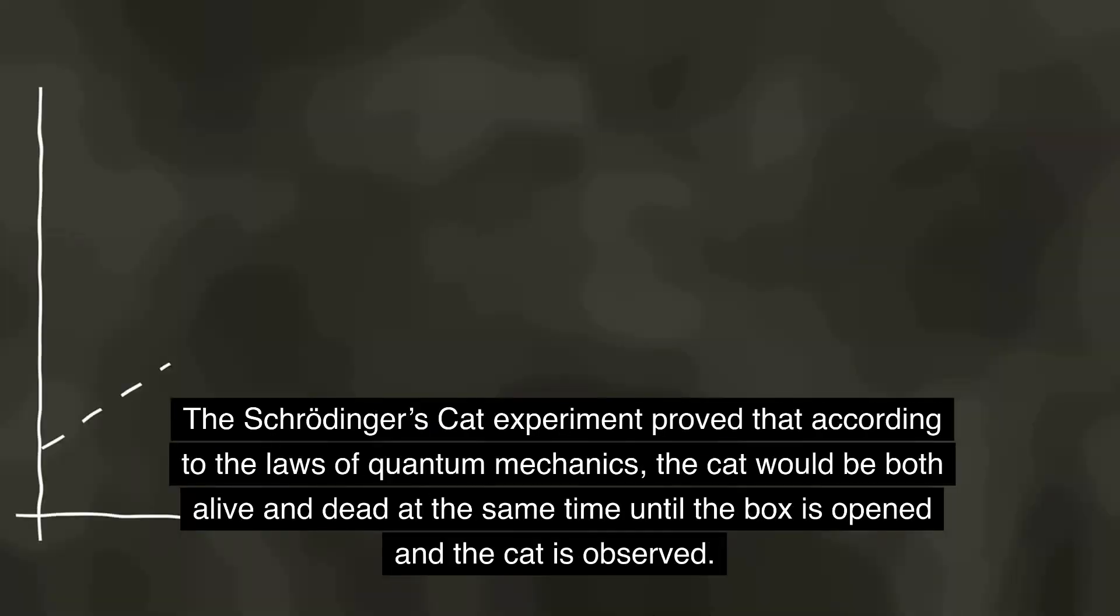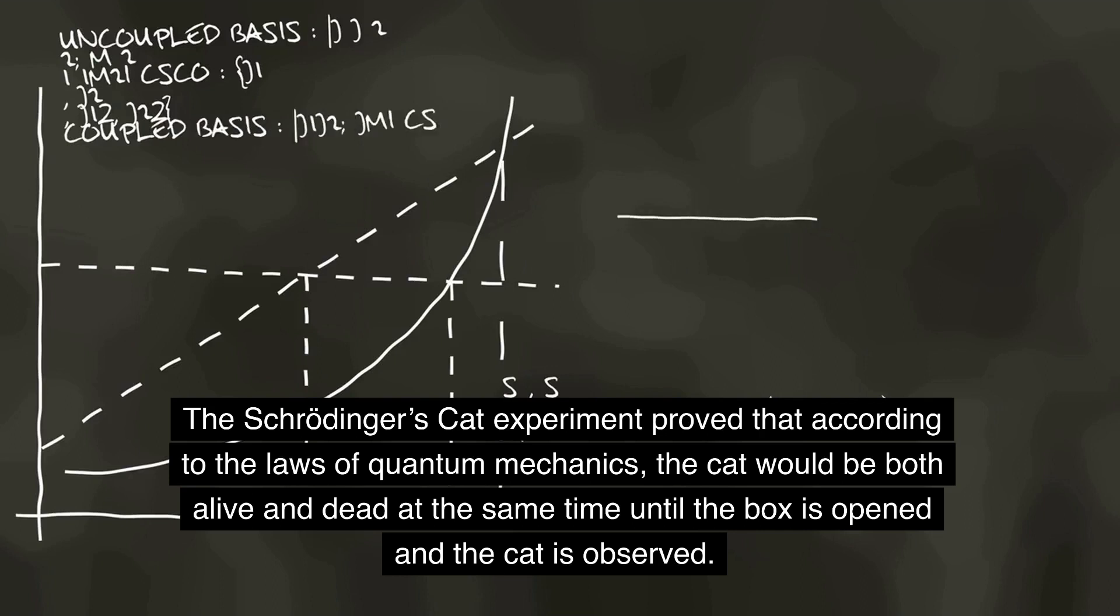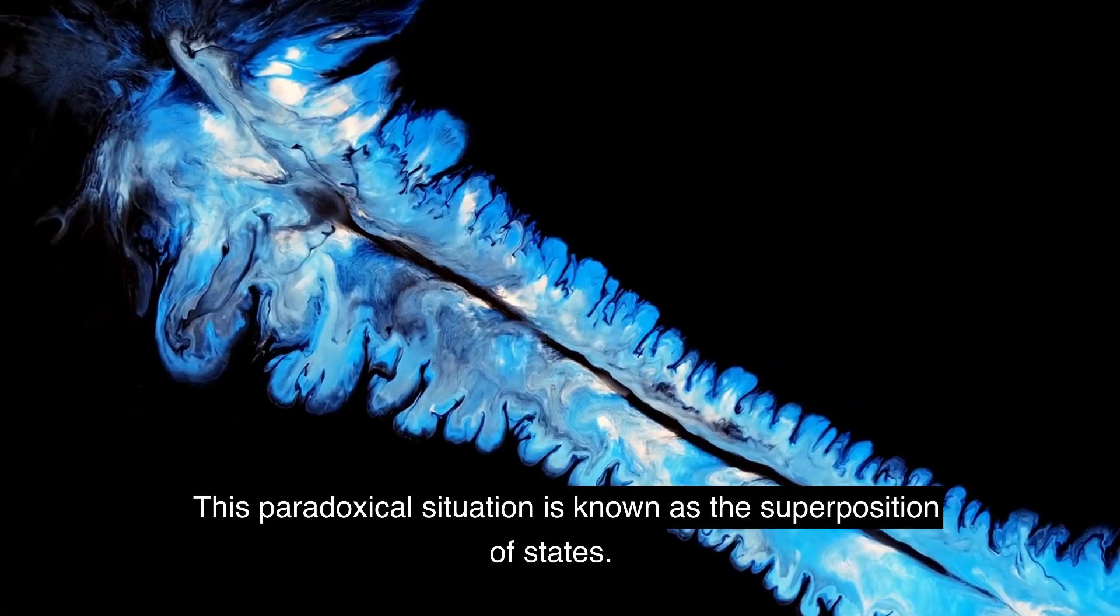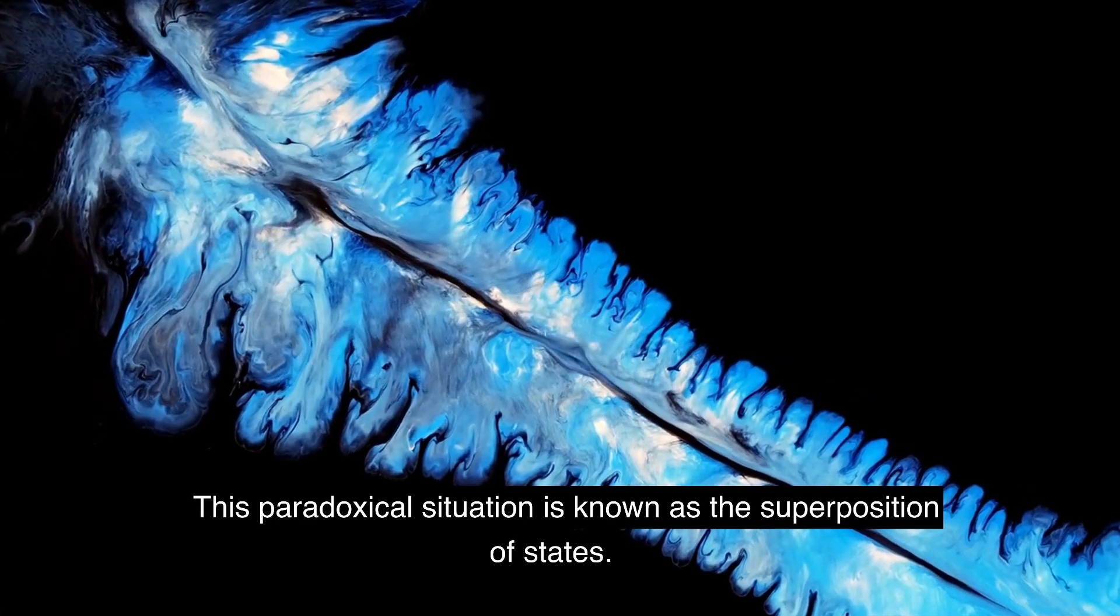The Schrödinger's CAT experiment proved that according to the laws of quantum mechanics, the cat would be both alive and dead at the same time until the box is opened and the cat is observed. This paradoxical situation is known as the superposition of states.